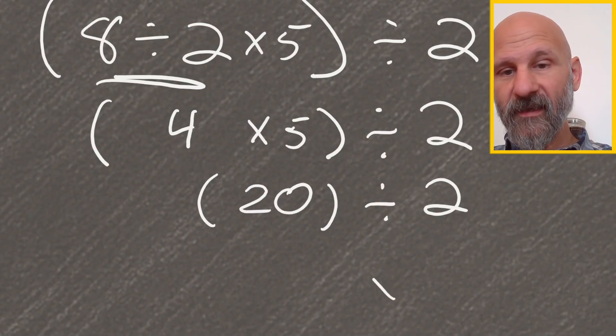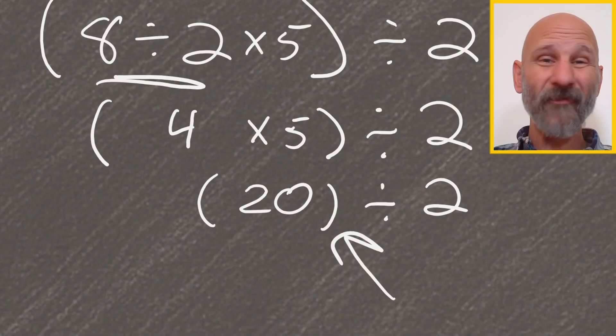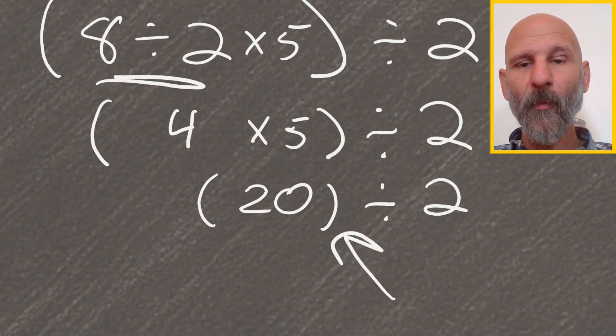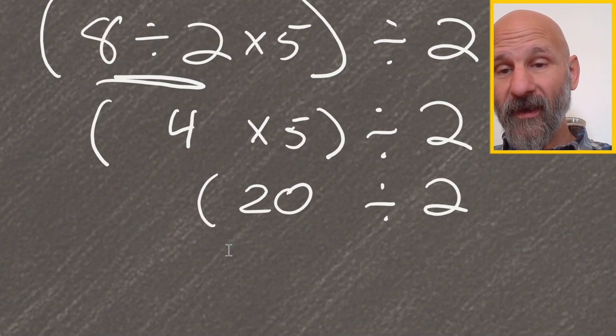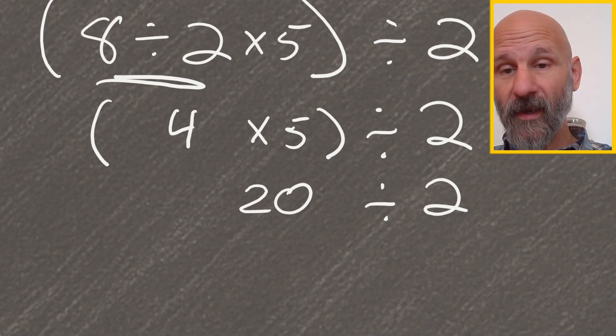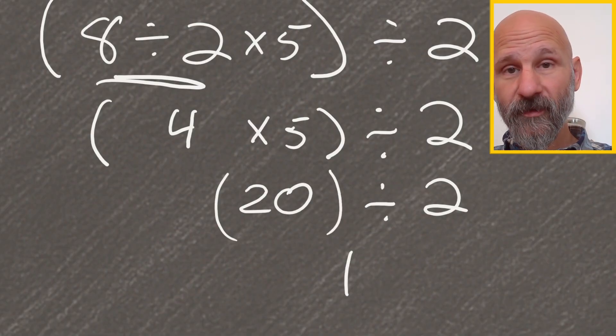Now this parentheses that's here is not a grouping symbol parentheses. It is now a kind of like a multiply, divide, or it's just a number parentheses. So this one is actually optional. Okay? So whether you have it in there or you don't, you're still doing a 20, and then divide it by 2, and that equals 10.